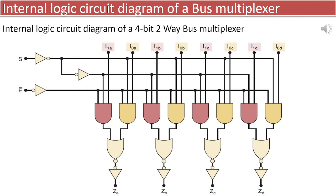Within the internal logic diagram of the bus multiplexer, we observe the select line having a dual logic path, allowing it to choose between input I1A and I0A, also extended to the other inputs as well.